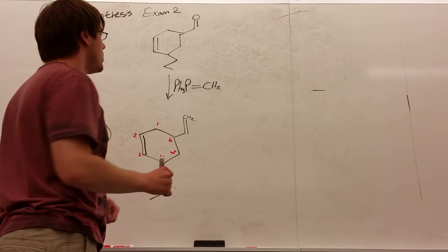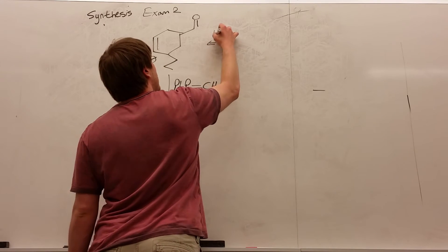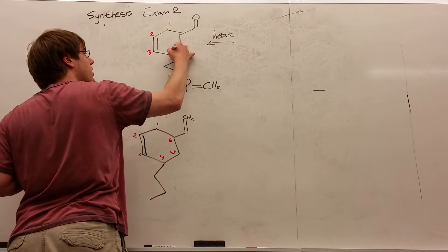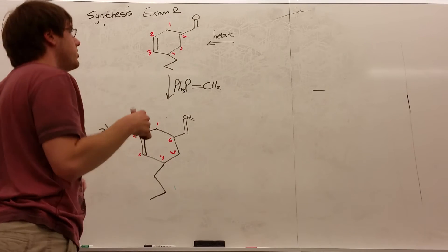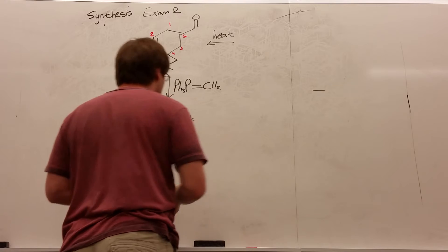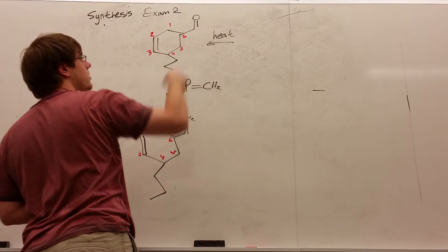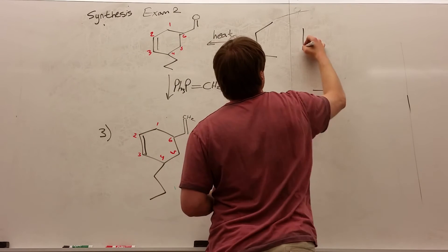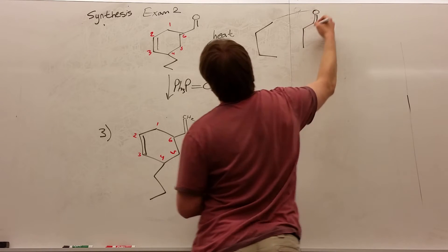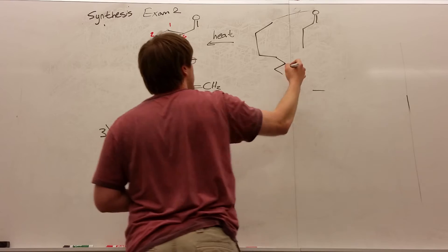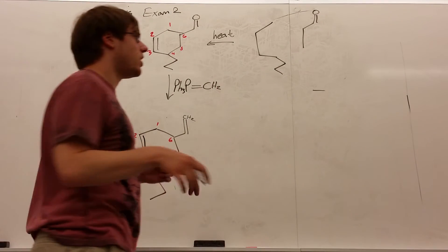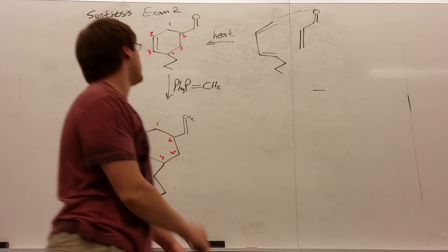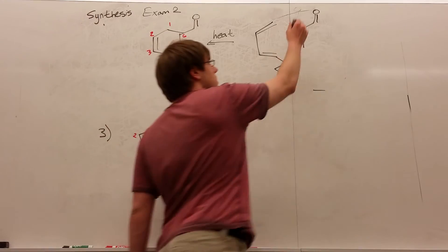Now I need to split this apart like any other Diels-Alder. So I'm going to do heat over the arrow, and I have to figure out the bonds that were formed. We know that the bond that we formed is between 4 and 5, and 1 and 6. So when I draw these out, I'm going to erase that bond between 4 and 5, and 1 and 6. Now I just need to put the double bonds in the right spot. There should be a double bond between 5 and 6, a double bond between 1 and 2, and a double bond between 3 and 4.